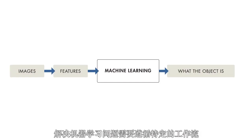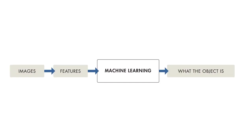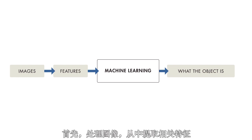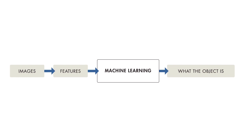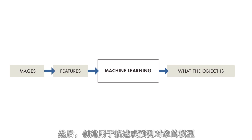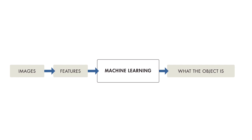When solving a machine learning problem, you follow a specific workflow. You start with an image, then you extract relevant features from it, and then you create a model that describes or predicts the object.